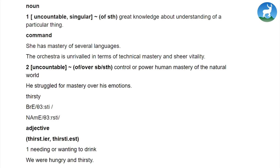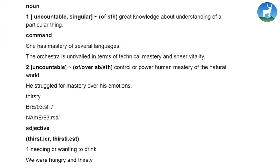The third entry is 'thirsty'. Again we can see the British and American pronunciations. Thirsty is an adjective; its comparative form is 'thirstier' and the superlative form is 'thirstiest'. The first meaning is needing or wanting to drink — example: 'We were hungry and thirsty.' The second meaning is having a strong desire for something, as in 'He is thirsty for power.' Thirsty can also be used as an adverb: 'Paul drank thirstily', where 'thirstily' is the adverb form.